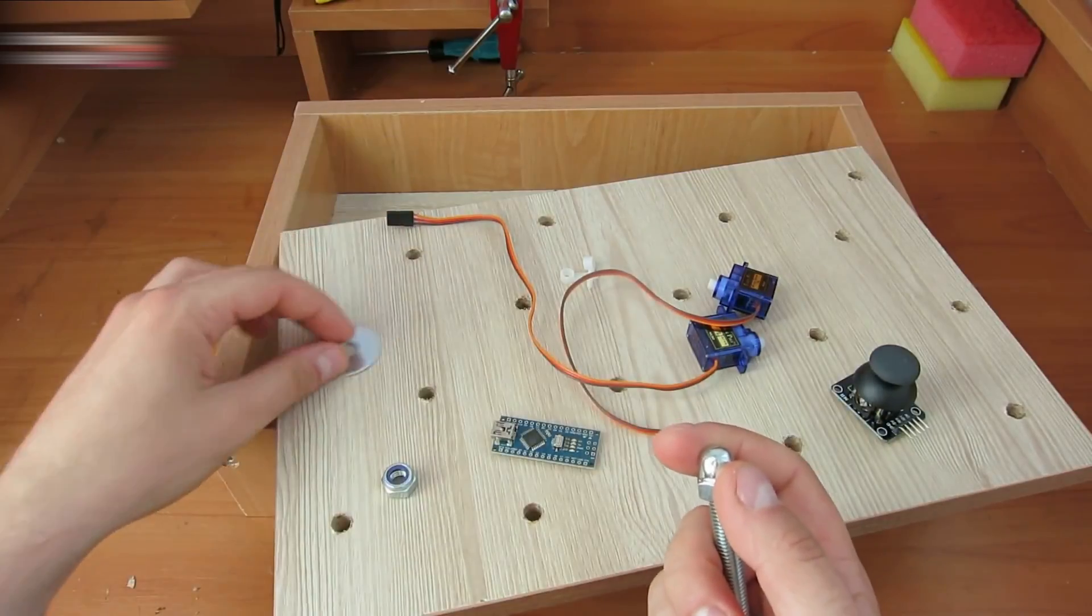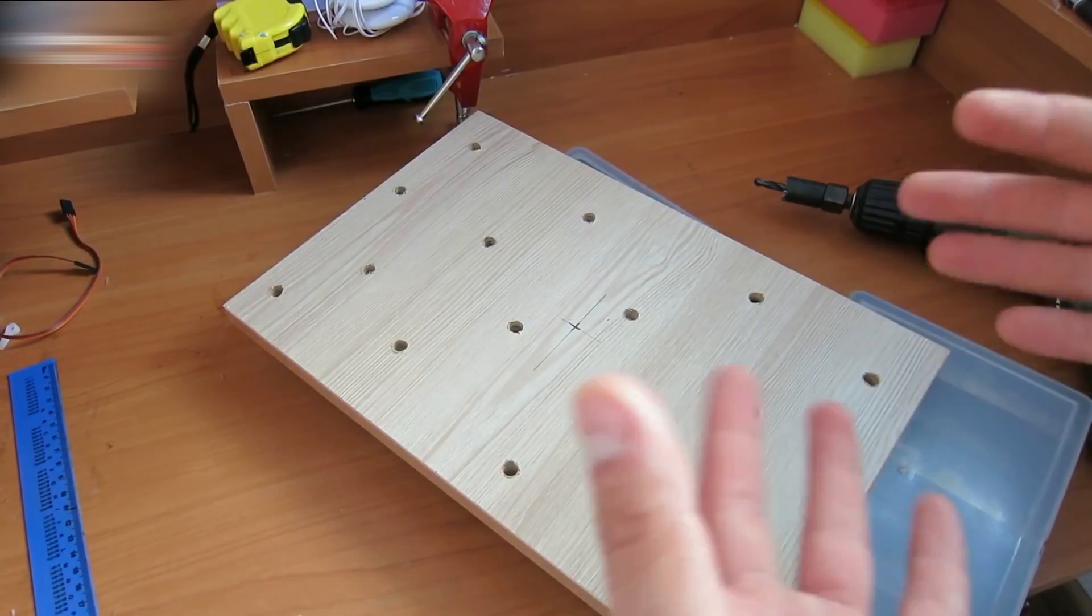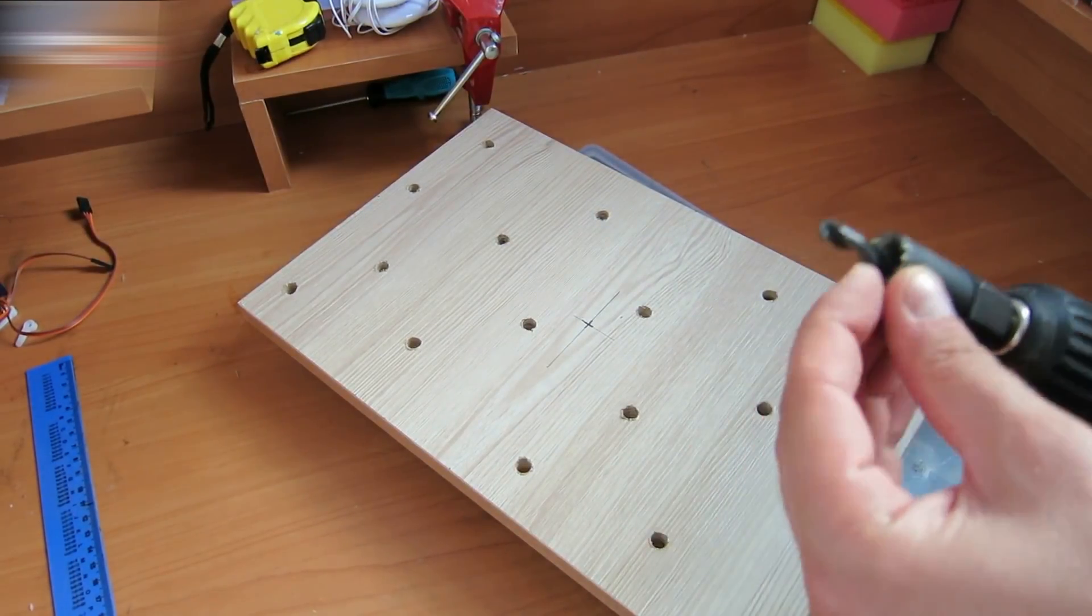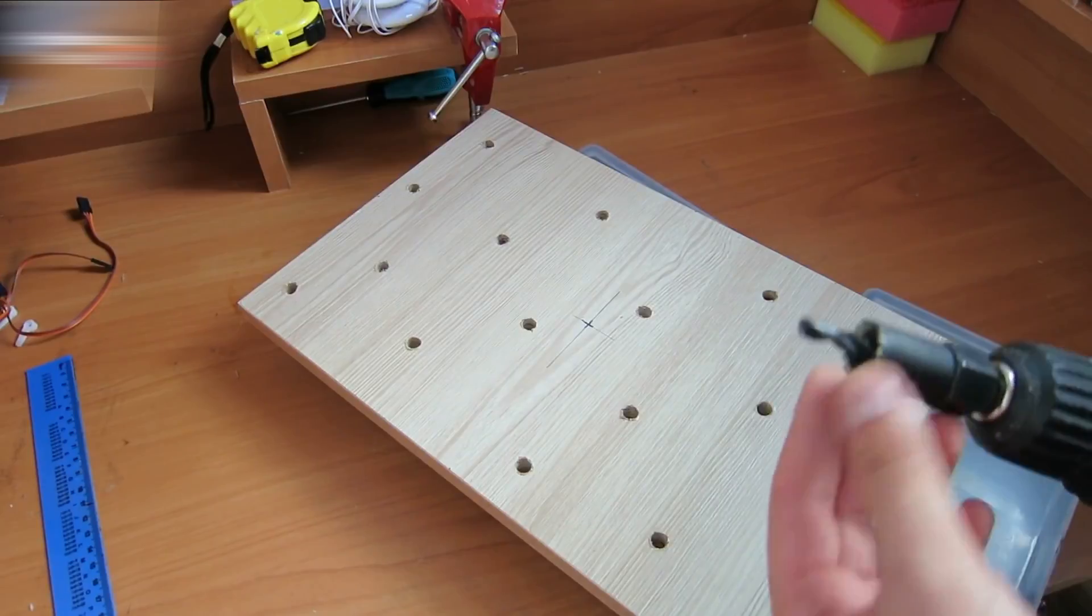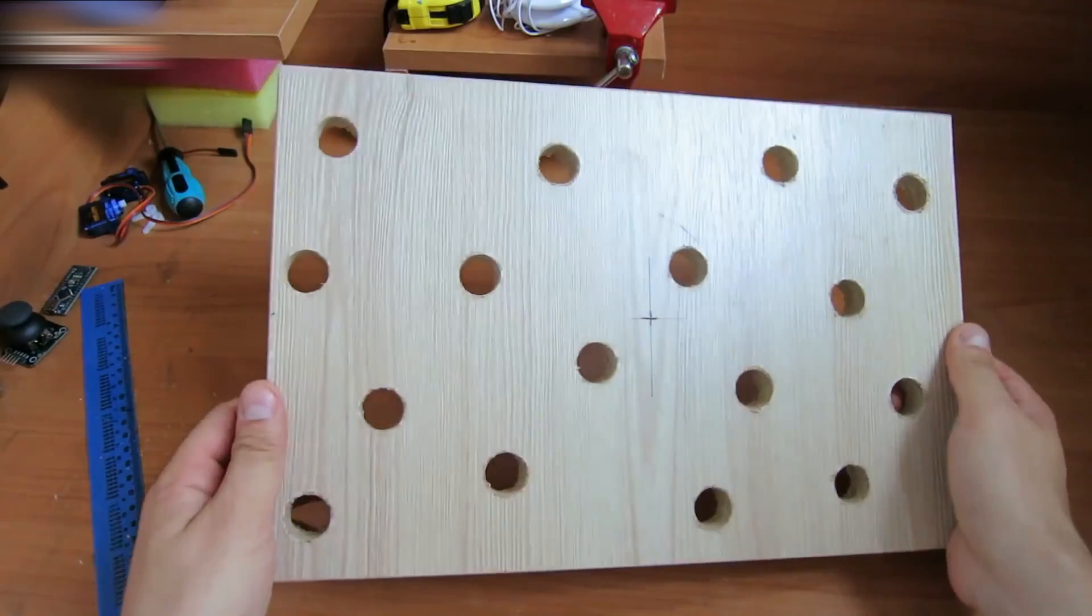A ball and a washer bolt. Make holes in the chipboard larger than the ball's diameter. Drill them with a 20mm bit. This is how it should look.